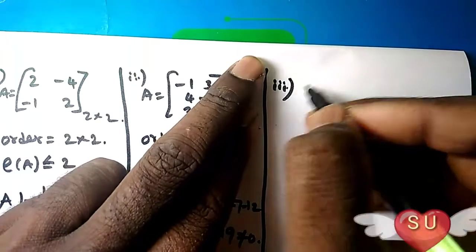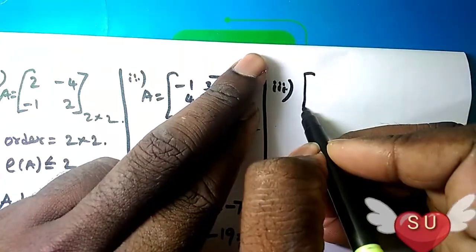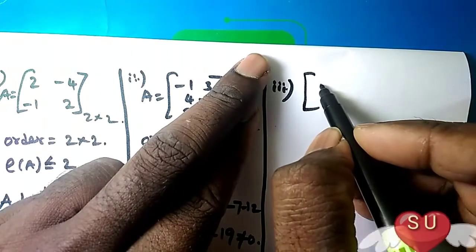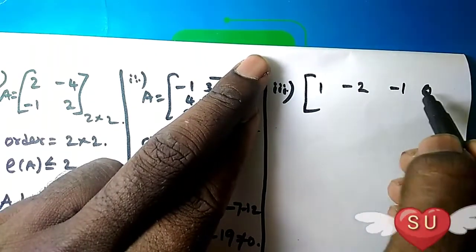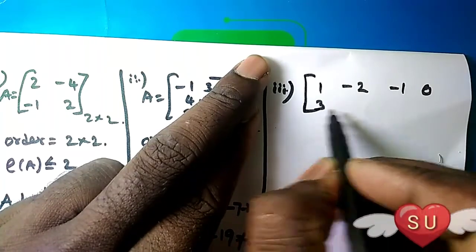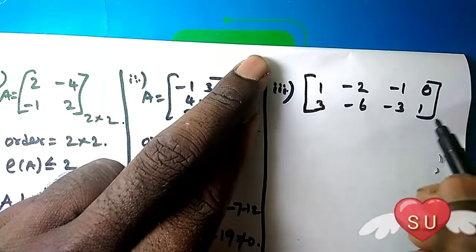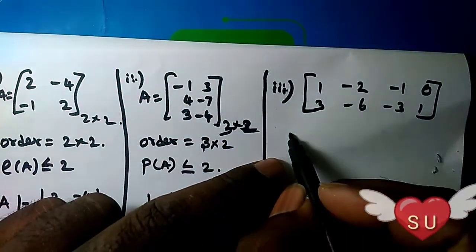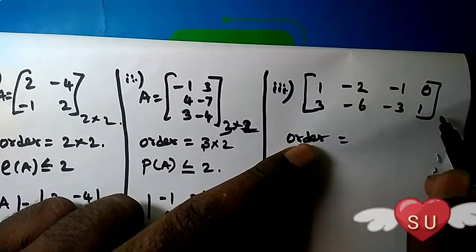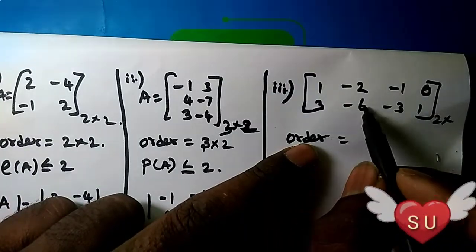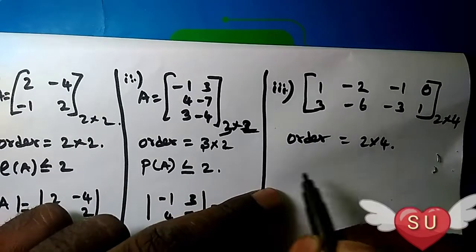You will have to work with many columns. The columns are going to have 1, minus 2, minus 1, 0. Next: 3, minus 6, minus 3, 1. You will have to order the numbers. So two rows, columns 1, 2, 3, 4 — order 2 into 4. Therefore, rank of the matrix is 2 is less than or equal to 2.